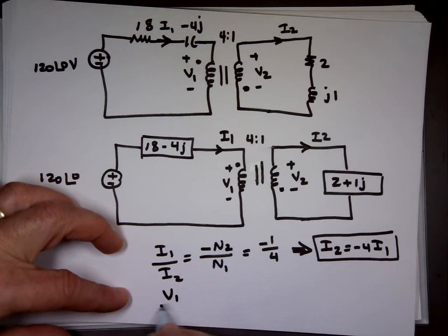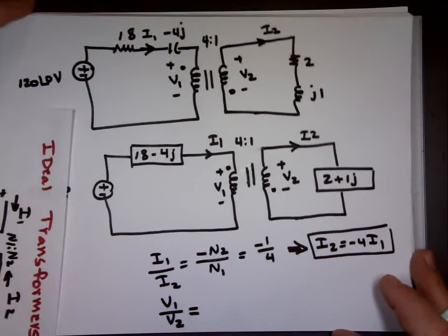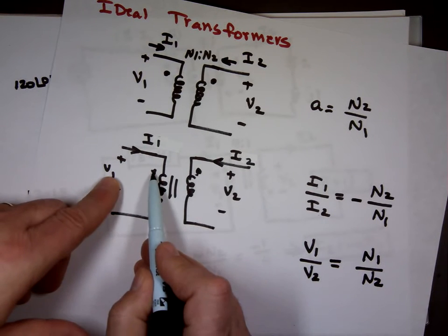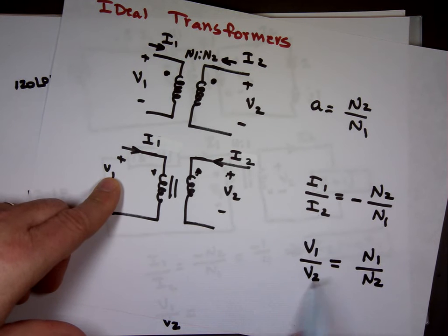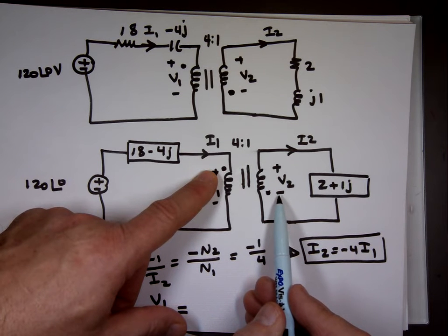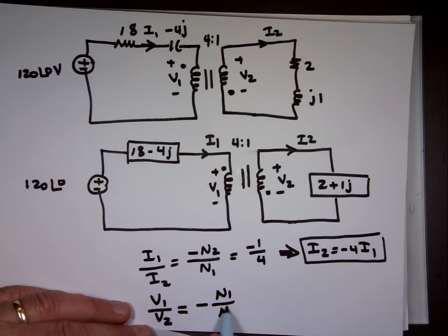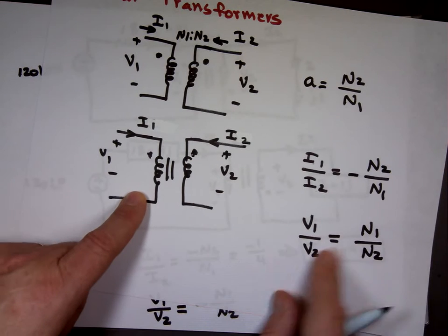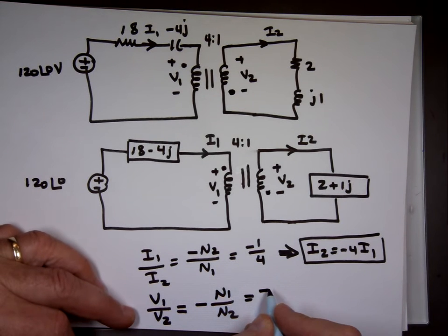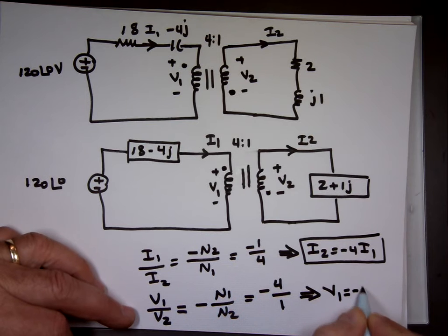Now for the voltage ratio: when the dots match in polarity — both positive — the ratio v1 to v2 equals n1 to n2. But here the dot polarity doesn't match; one is plus and the other is minus. So v1 to v2 becomes negative n1 to n2, which is negative 4 to 1. Therefore v1 equals negative 4 times v2.